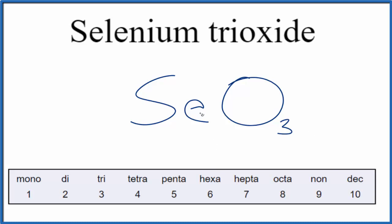That makes the formula for selenium trioxide, SeO3. If you were given the formula SeO3 and asked to write the name, you'd know you have two nonmetals, so you'll have to use prefixes.